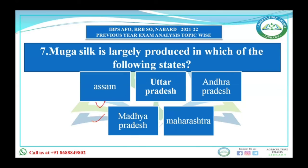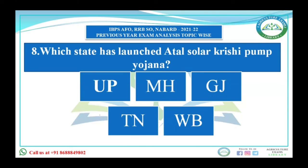Which state is not related to the Atal Solar Krishi Pump Yojana? Options: UP, Maharashtra, Gujarat, Tamil Nadu, West Bengal. This scheme was launched by the Maharashtra government. Under this scheme, the government of Maharashtra provides two LED bulbs, a DC fan, and a mobile charging socket to farmers. It also provides a subsidy of up to 95 percent on solar pump purchases. Farmers with less than five acres pay only 5 percent of the cost of a 3 HP solar pump, while farmers with more than five acres get a 5 HP pump for Rs. 30,000.